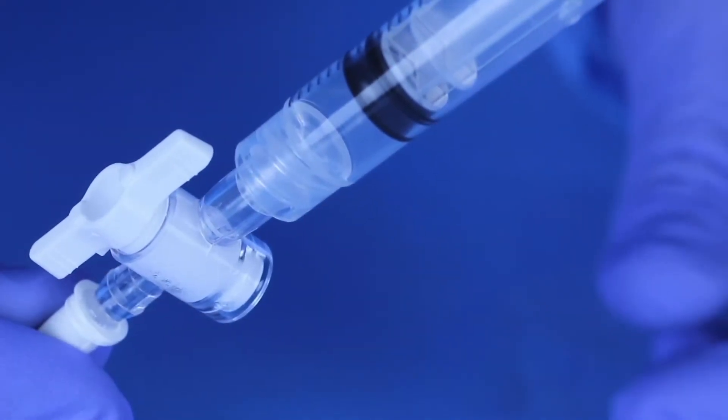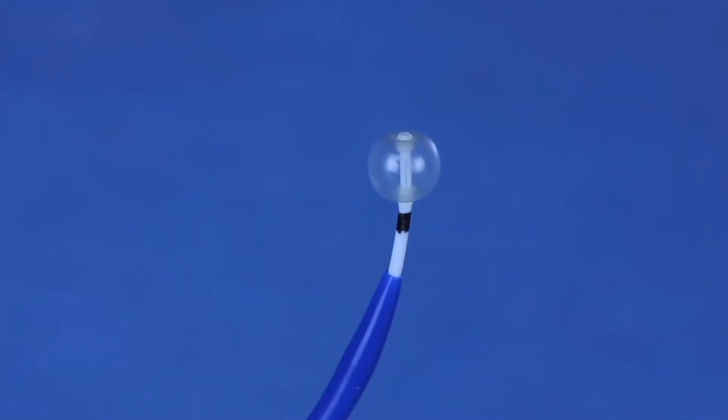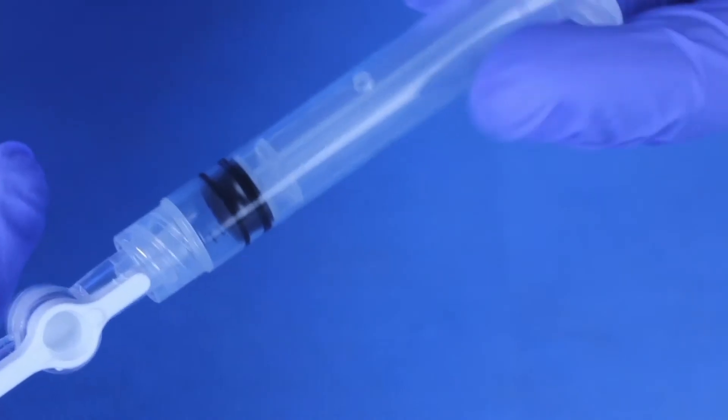To inflate balloon, open balloon stopcock by turning lever parallel to catheter. Inject 0.6 cc of air. Observe balloon for leakage. Deflate balloon and disconnect syringe.